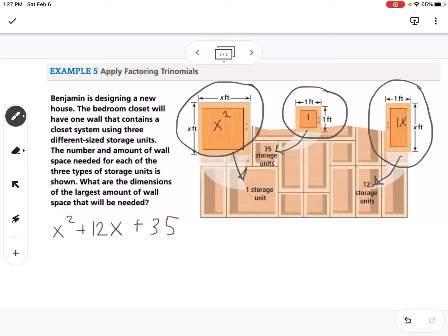So now I have an expression. I have a trinomial, and I want to know what are the dimensions of the largest amount of wall space that will be needed. So we want to find what's this dimension by this dimension. So we can do that by factoring. So I'm going to say, okay, what are my factors of 35? Well, I know 1 and 35. I also know 5 times 7. And 5 times 7, 5 plus 7 equals 12. So those are the ones I want to use.